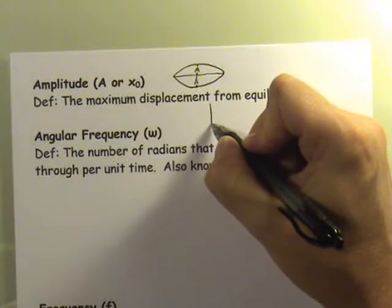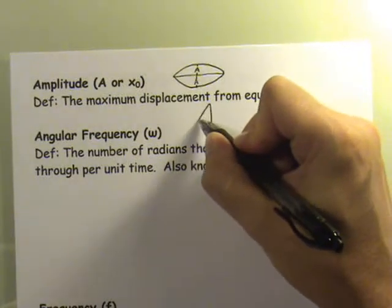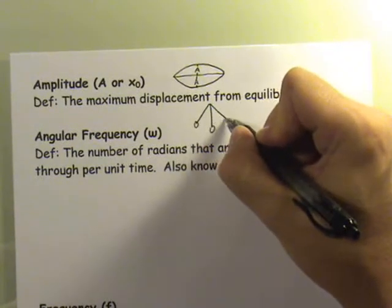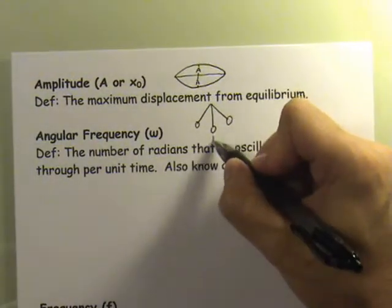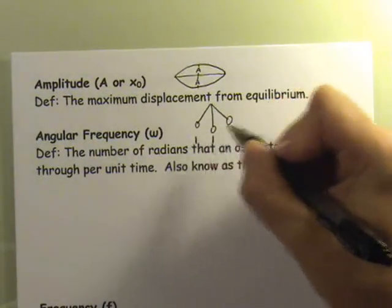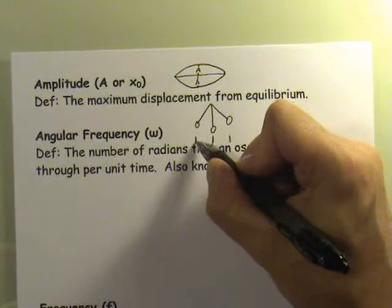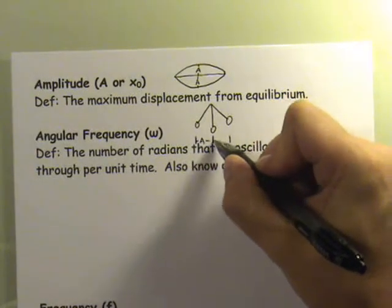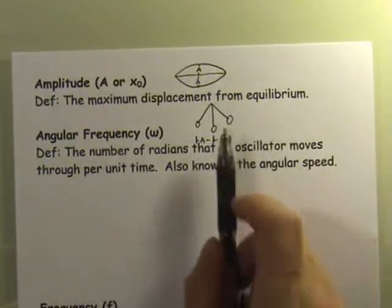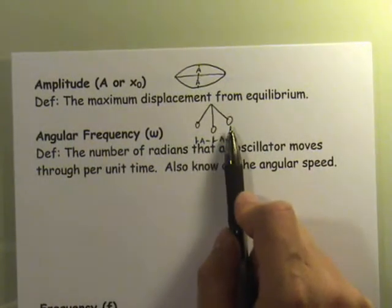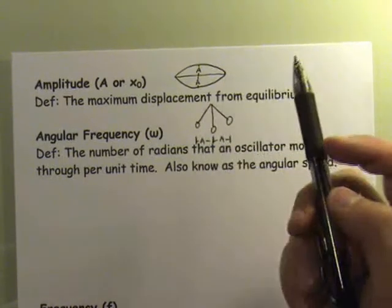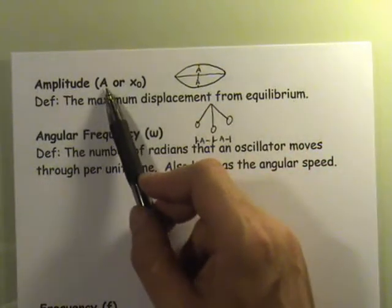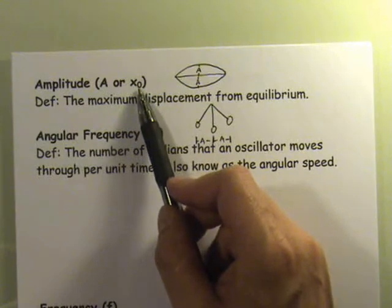Another example is the pendulum. We set the pendulum in motion — here's the equilibrium position, and here is the extreme displacement. From equilibrium to the point at which you have displaced it the furthest, that is referred to as the amplitude. In our book, we're mostly going to refer to it as A, but it is very common for it to be referred to as X-naught.